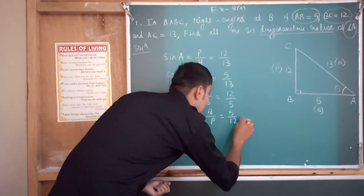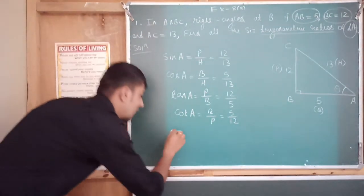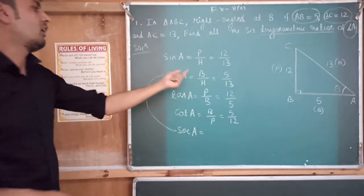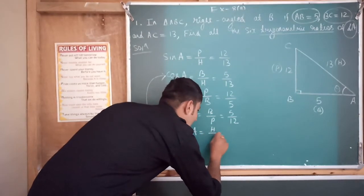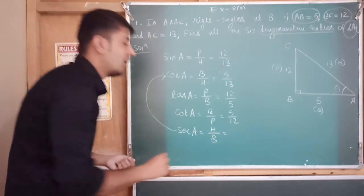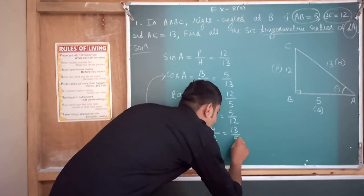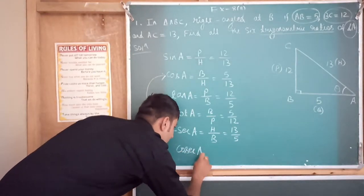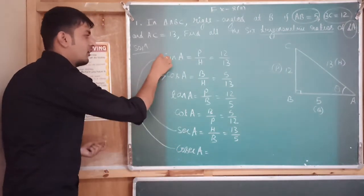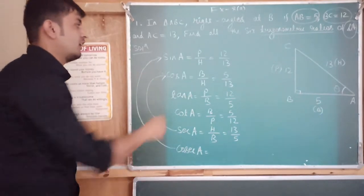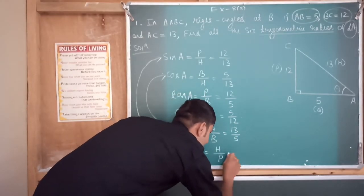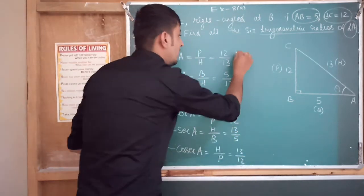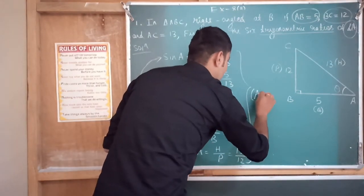The fifth ratio is sec A. Sec A is the reciprocal of cos A, so it equals hypotenuse over base (H/B), giving us 13 over 5. Finally, cosec A equals hypotenuse over perpendicular (H/P), which gives 13 over 12. So these are your six trigonometric ratios.